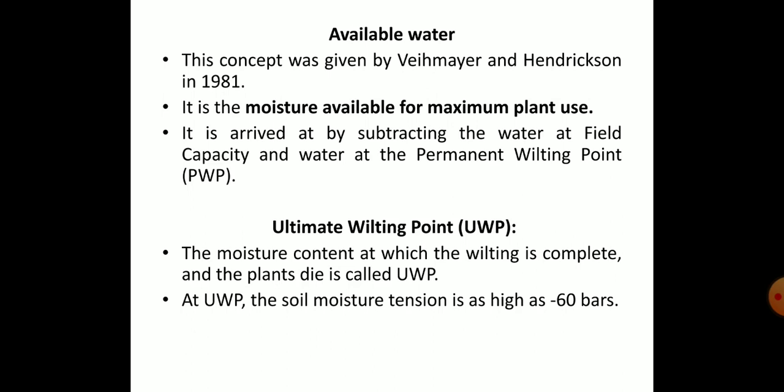Now, ultimate wilting point: the moisture content at which wilting is complete and plants die is known as the ultimate wilting point. At this stage, there is such severe water deficiency that plants have almost died, and even if you provide water they will not revive. The soil moisture tension at ultimate wilting point is around minus 60 bars. Always remember these values as they can be asked.